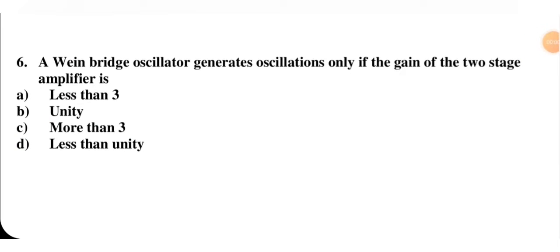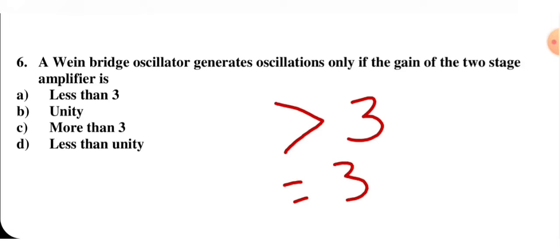A Wien bridge oscillator generates oscillation only if the gain of the two-stage amplifier is — less than three, unity, more than three, or less than unity? In the case of a Wien bridge oscillator, to generate oscillation, the voltage gain must be greater than three. So more than three is required to generate oscillation — option C is correct.